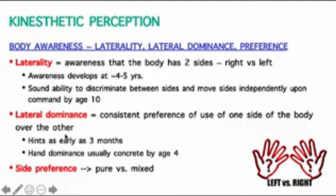Side preference is slightly different from dominance. Dominance is just what side of the body you tend to initiate with more. Side preference means you can have different preferences for different body parts. For example, in dance, you might prefer to balance on your right leg but use your left leg as a gesture leg. The side with the majority of preferred body parts indicates the more dominant side.